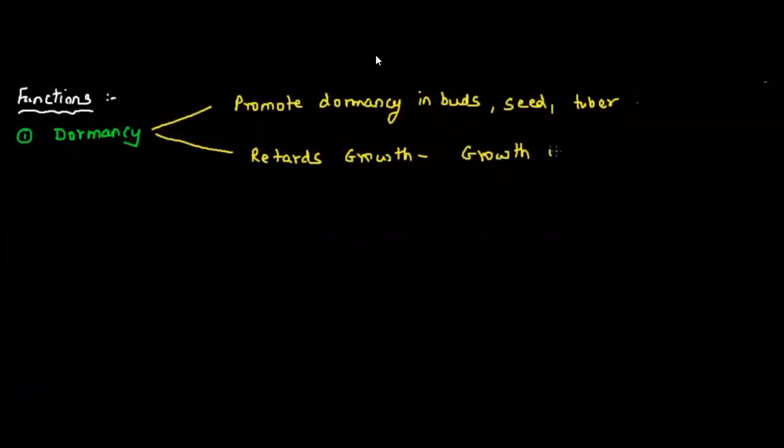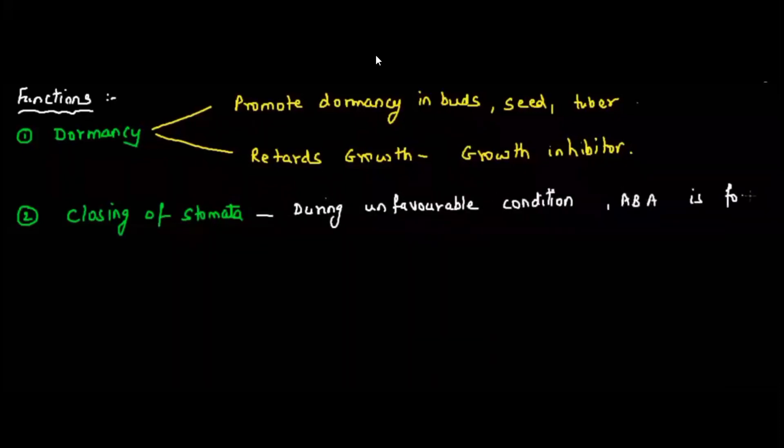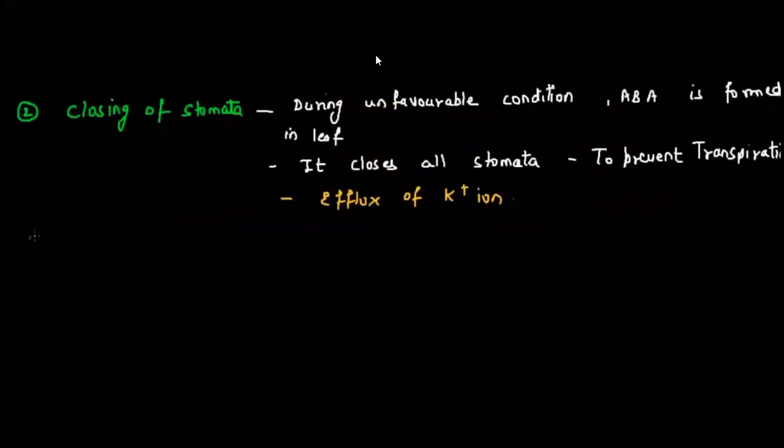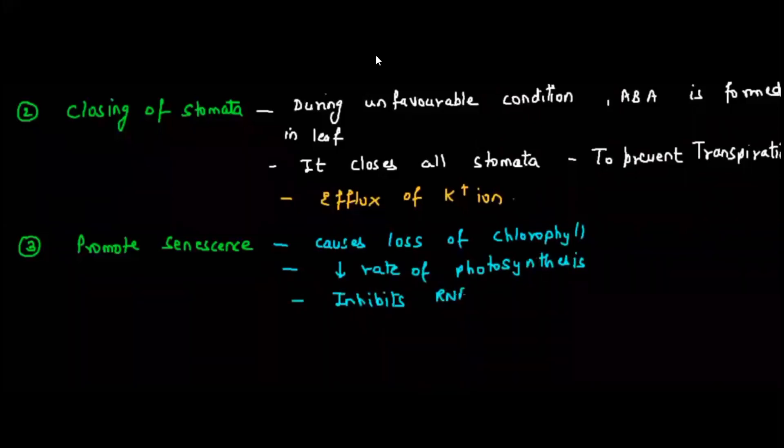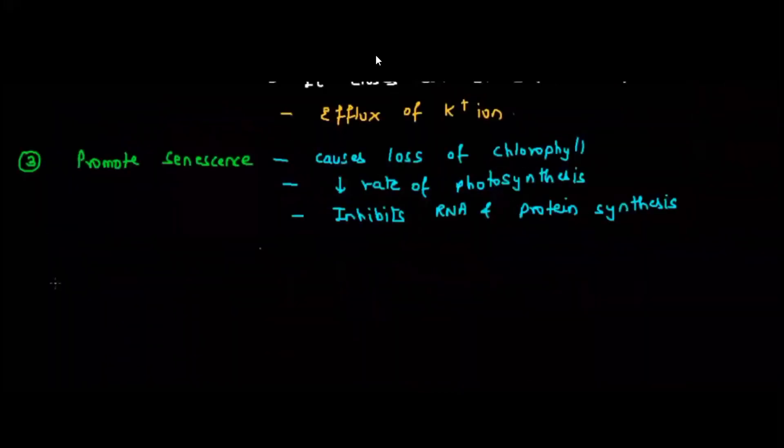Let's look at the functions of abscisic acid. Abscisic acid promotes dormancy in bud, seeds and tuber. Abscisic acid retards the growth, so it's a growth inhibitor. It will not allow the plants to grow under unfavorable condition. Abscisic acid is responsible for closing of stomata during unfavorable condition. The stomata closes because of abscisic acid, so it prevents the loss of water by transpiration. There is efflux of K+ ion, that is potassium ion. Abscisic acid promotes senescence, that is aging. Since aging is promoted, it causes the loss of chlorophyll. Since there is loss of chlorophyll, the rate of photosynthesis will also decrease and it will inhibit the RNA and protein synthesis.